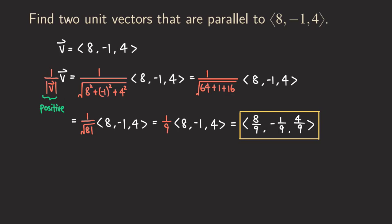We need one more — so how do we get the other one? We can make the vector point in the opposite direction as V. This one is already parallel to V, so the other one would simply be negating it — we just put an extra minus sign in front. So it would be negative eight over nine, then negative one over nine, and then four over nine.